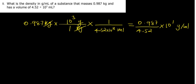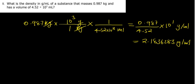So we divide 0.987 by 4.52, which gives us 0.21, but it is times 10 to the power 1, making it 2.1836... grams per milliliter. Now, this number has 3 significant figures, and this number also has 3 significant figures, so the answer should also have 3 significant figures. That gives us 2.18 grams per milliliter, which is the answer for this question.